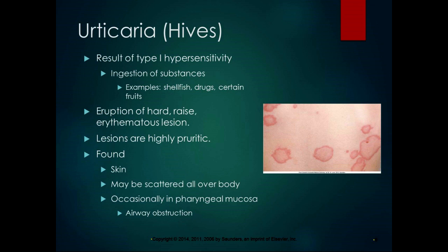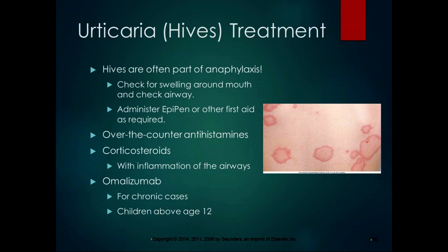What distinguishes hives from contact dermatitis is that hives produce hard raised erythematous lesions not only at the point of contact but spread all over the body. The lesions are highly pruritic, found scattered on the skin, and occasionally in the pharyngeal mucosa, which could potentially cause airway obstruction. This can be serious and could develop into anaphylaxis, so check for swelling around the mouth and airway when someone has hives.